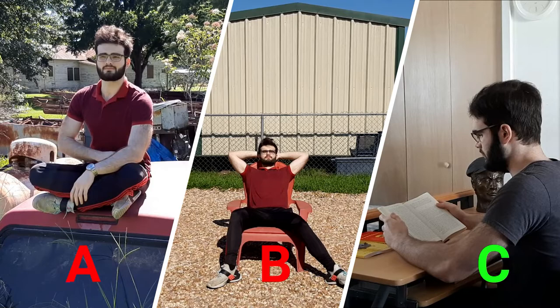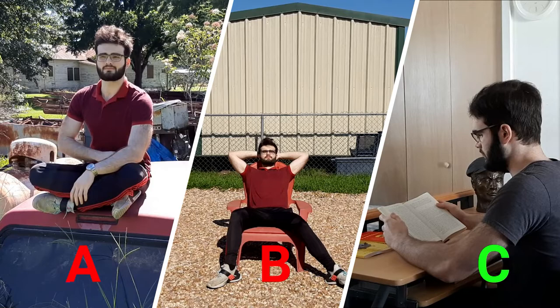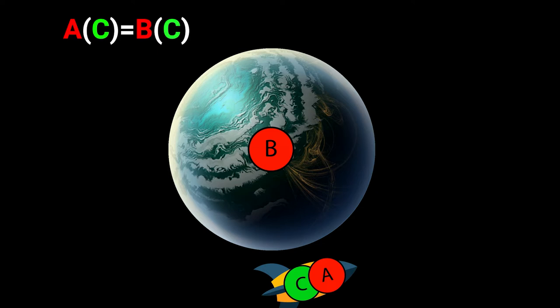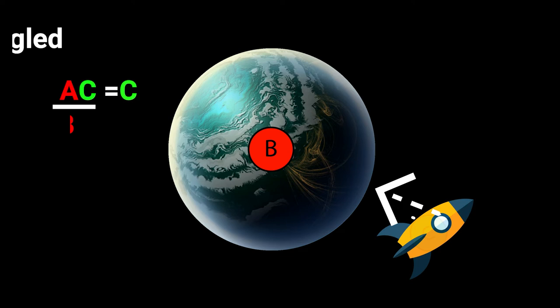The first step on your ship is to perform a Bell measurement on particles A and C — you can think of it as multiplying the two together. The measurement doesn't reveal C's state, but since B is identical to A, by sending the data from the measurement to particle B on the planet, those at the station there can convert B into C, kind of like balancing an equation.